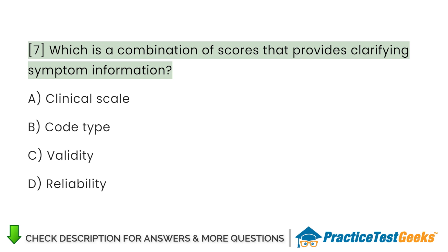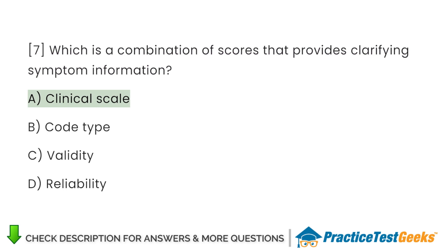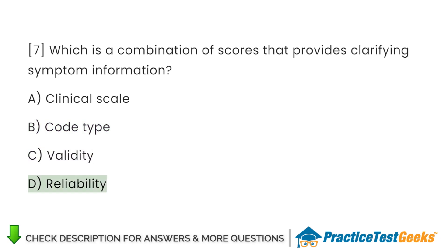Which is a combination of scores that provides clarifying symptom information? A. Clinical scale B. Code type C. Validity D. Reliability